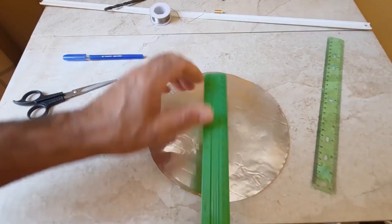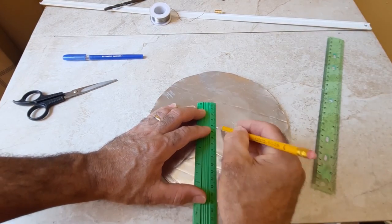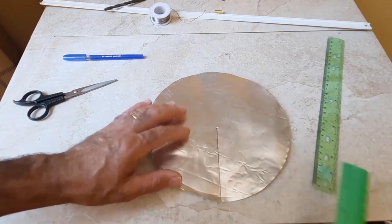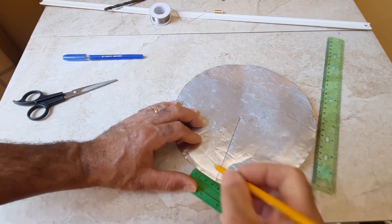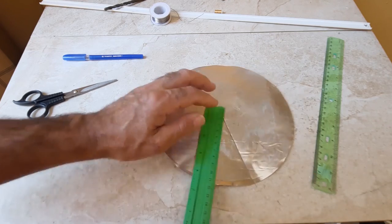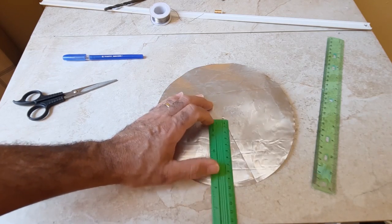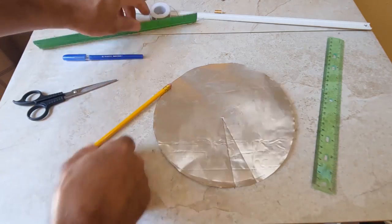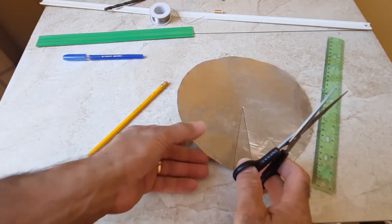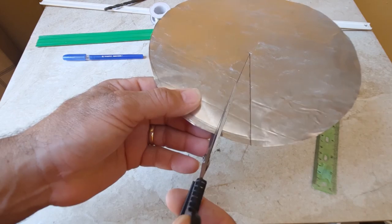Sixth step, take the ruler again and we are going to draw a line from the center to the end. You can separate three centimeters. Seventh step, you must cut a single line to the center and ready.